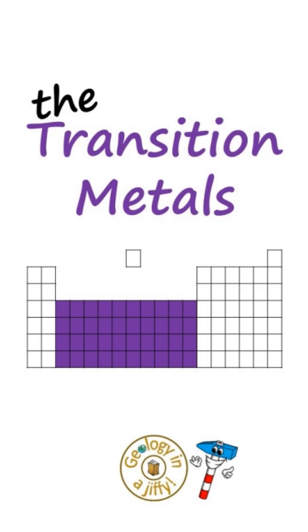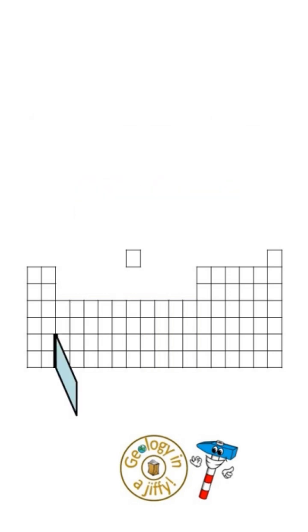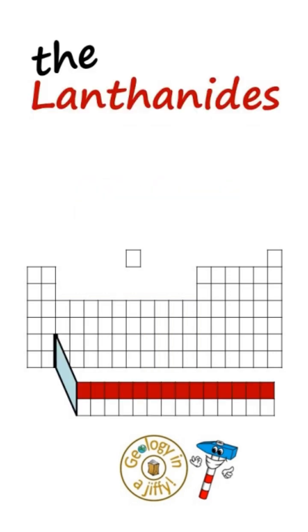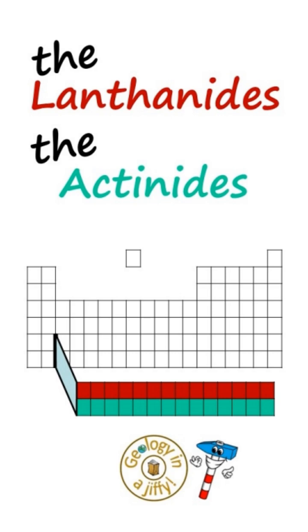This block is the transition metals, and in here are called the lanthanides and the actinides.